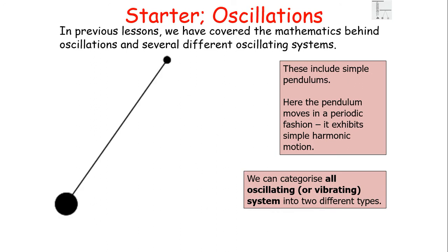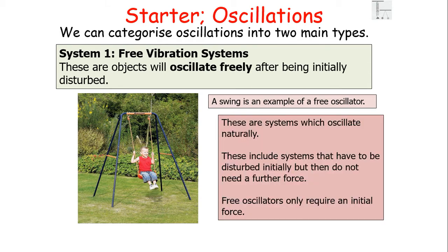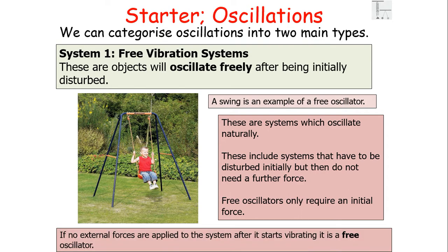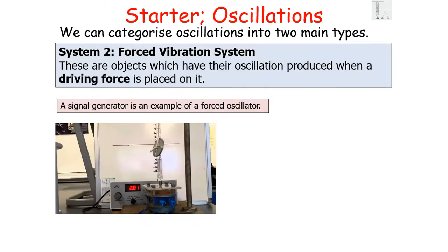We can categorise all oscillating or vibrating systems into two different types. Type 1 is a free vibration system — objects which oscillate freely after being initially disturbed. A swing is an example of a free oscillator. These systems oscillate naturally and only require an initial force to start the motion and overcome inertia. If no external forces are applied after it starts vibrating, we call it a free oscillator. Free vibrations involve no energy transfer into or out of the mechanical system.